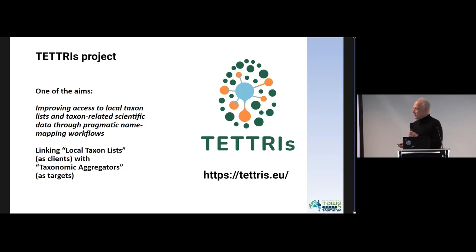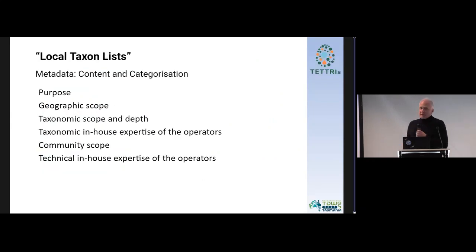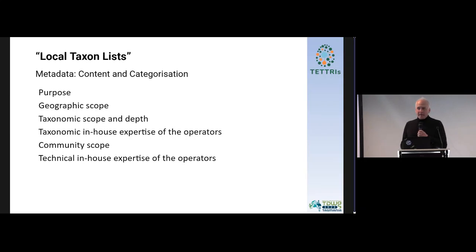One of the aims is this linking of local taxon lists to taxonomic aggregators, which is the content of this 'improving access to' — et cetera. That's the aim of one of the tasks in one of the work packages. TETRIS is much bigger, so look it up online. Local taxon lists are a very wide term that might go from researchers in any biological field who has some taxon names in their Excel sheet, all the way to something like a regional taxonomic checklist like EuroPlusMed plant-based, which is also, in a way, a local thing compared to the global aggregators.